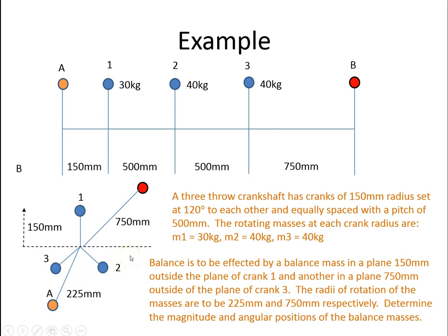And equally spaced with a pitch of 500mm. So there's crankshaft 1, crankshaft 2, crankshaft 3, pitched at 500mm each. And the rotating masses at each crank radius are 30kg, 40kg, and 40kg.